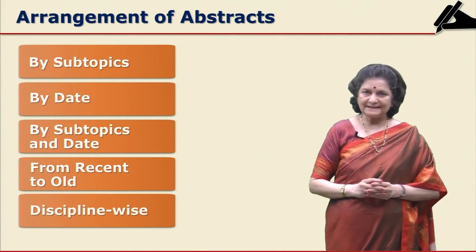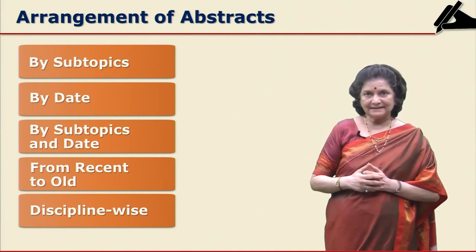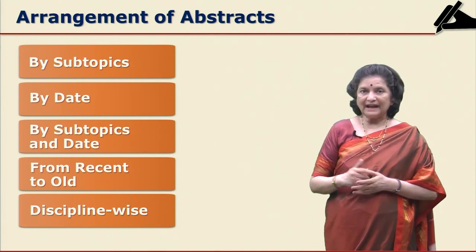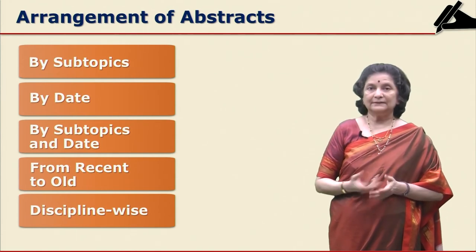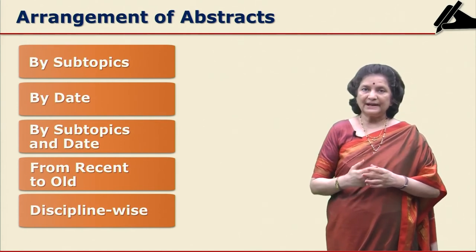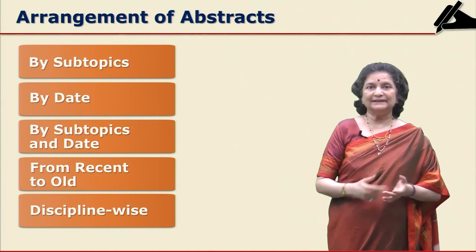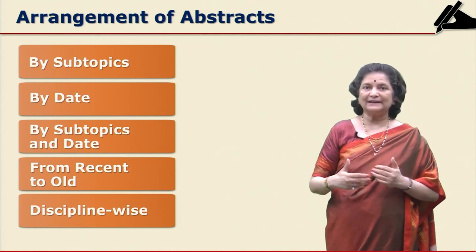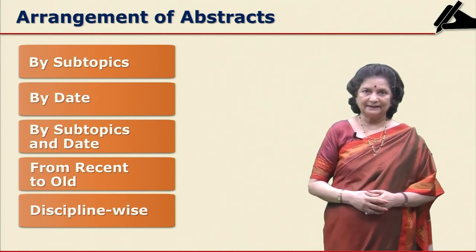For interdisciplinary topics, the arrangement can be discipline-wise. For example, if the topic is students' behavior in the classroom, the researcher can find material from education, then education psychology, and pure psychology. If you are a student of education, first take education, then education psychology, and then psychology — so discipline-wise you can arrange the abstracts.